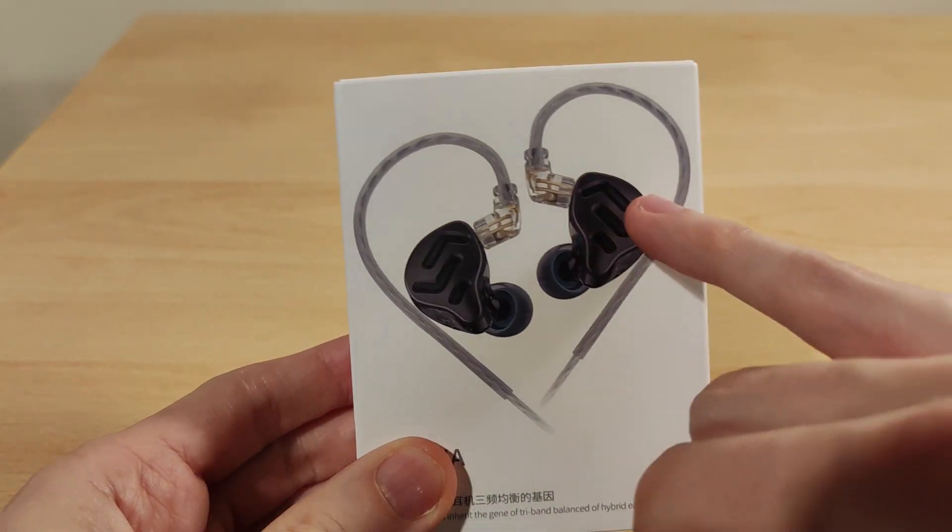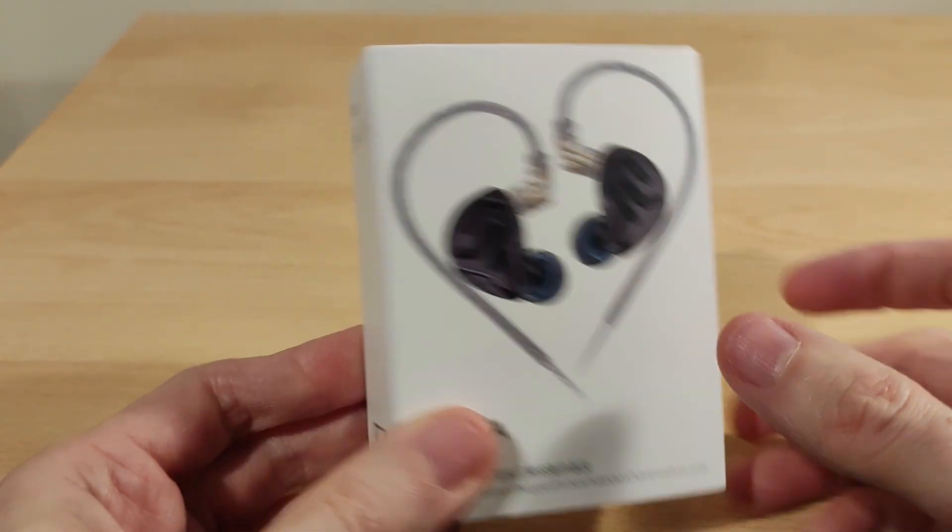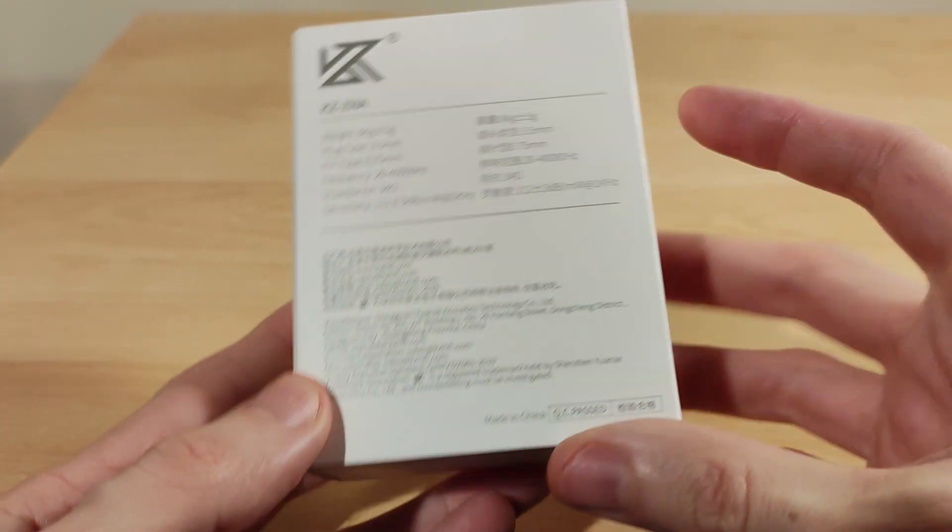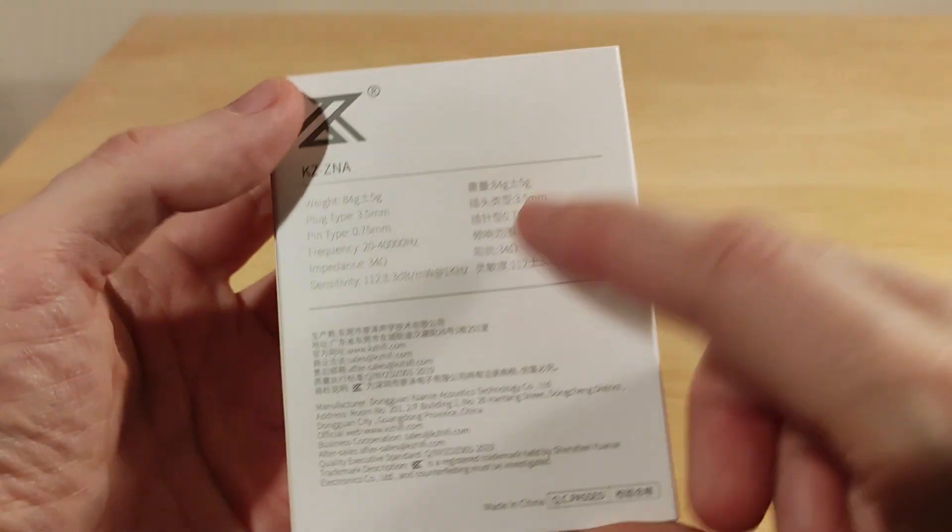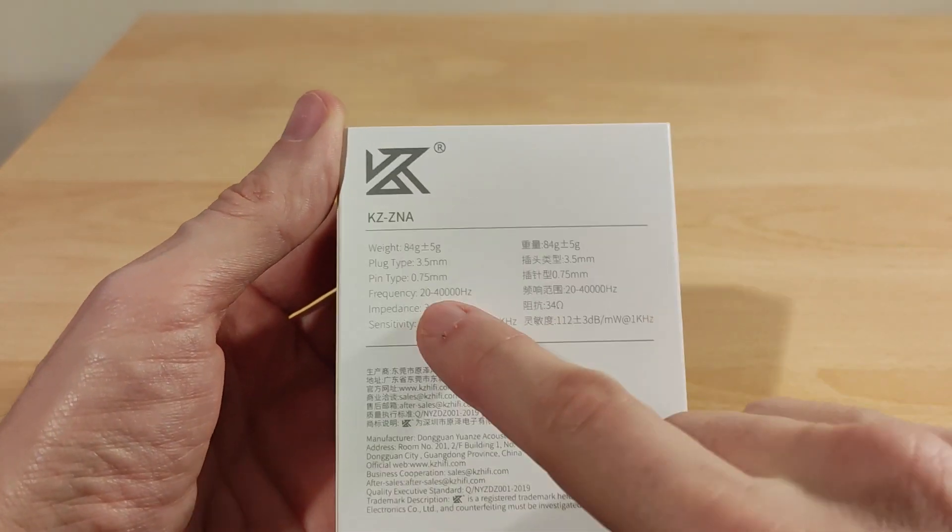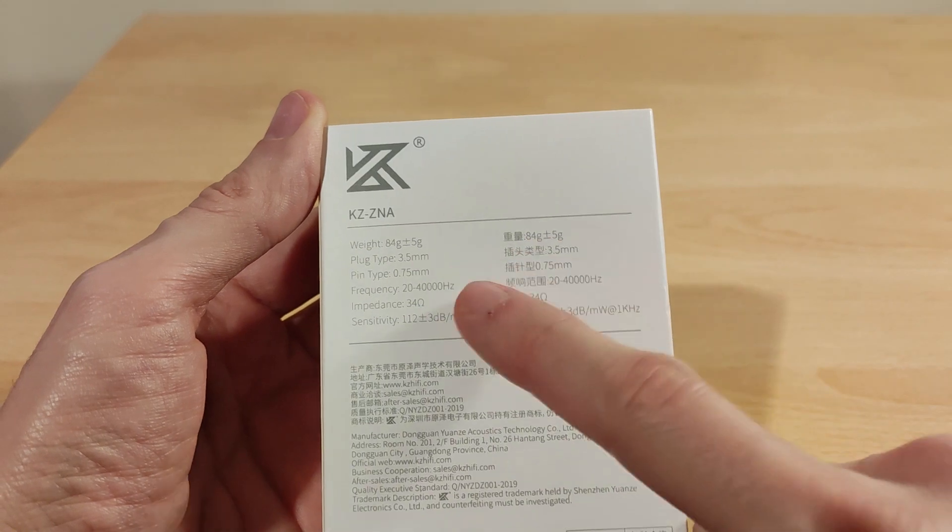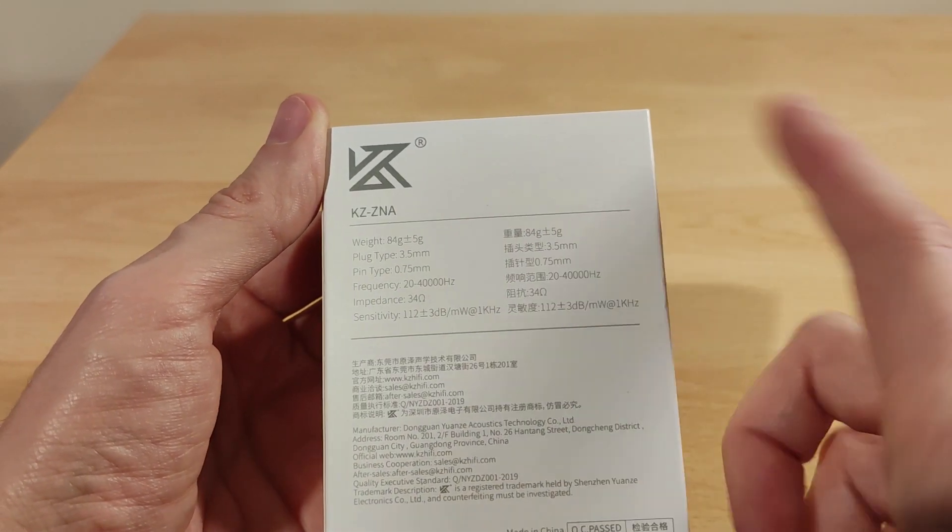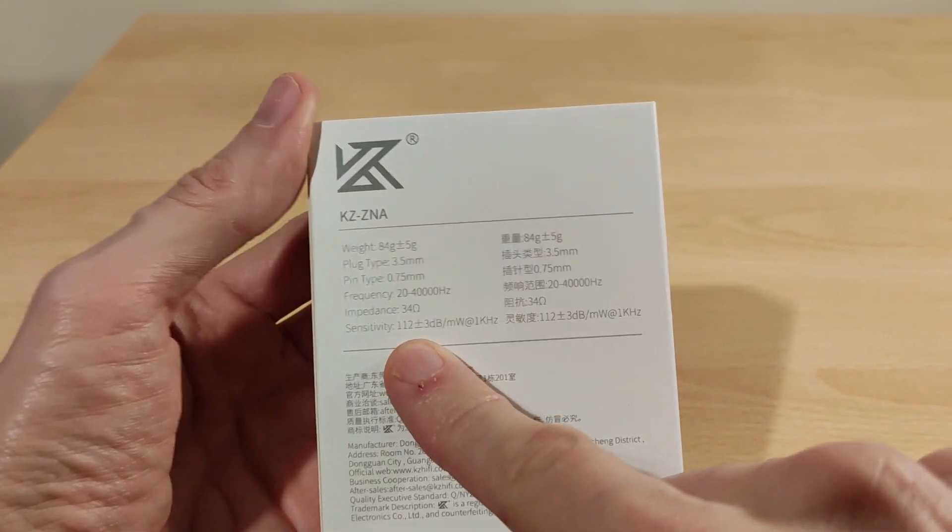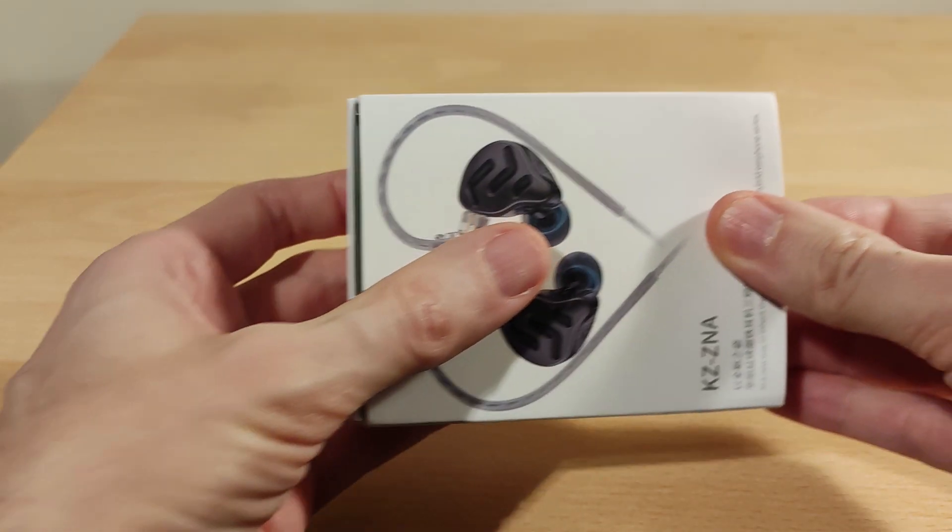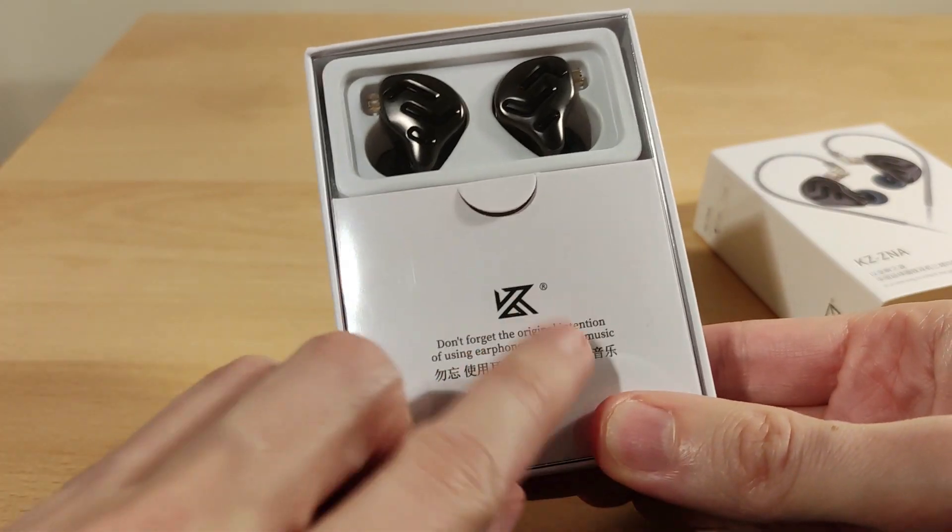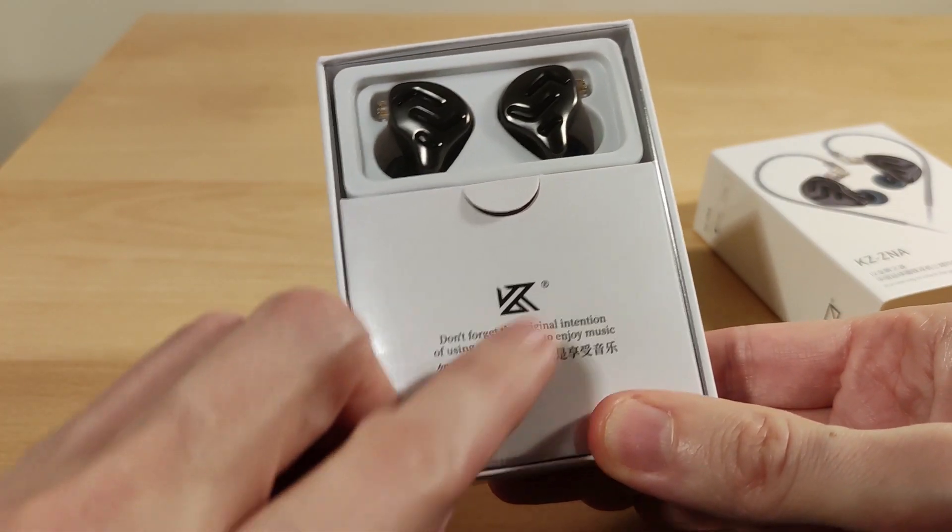Looks a bit like the Z AX I think from the back. No mic, obviously black specs. Impedance is 34 ohms, which is kind of high, well higher for them. 20 to 40,000 hertz, all this stuff's normal from KZ and CCA. Sensitivity is 112. Don't forget the original intention of using earphones is to enjoy music.